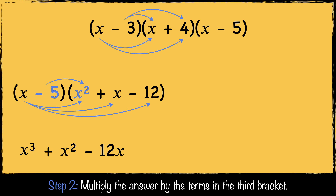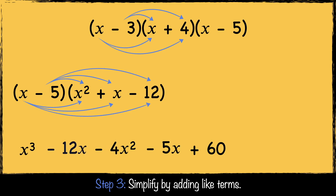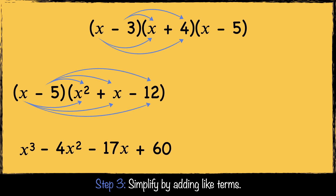Then we multiply minus 5 by x squared, which is minus 5x squared. Minus 5 multiplied by x is minus 5x, and minus 5 multiplied by minus 12 is 60. Now we're on to step 3, where we simplify by combining like terms. x squared and minus 5x squared combine to make minus 4x squared. Minus 12x and minus 5x combine to make minus 17x. Now we have expanded all three brackets to get x cubed minus 4x squared minus 17x plus 60.